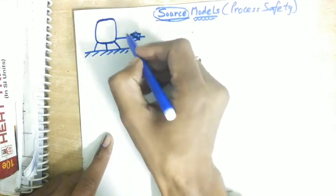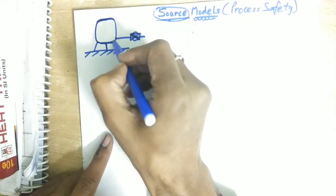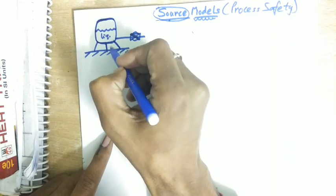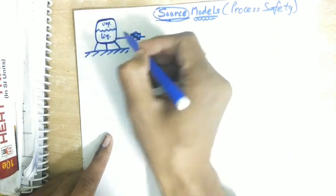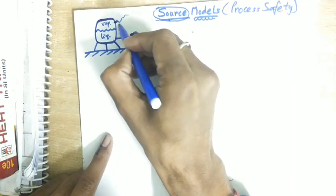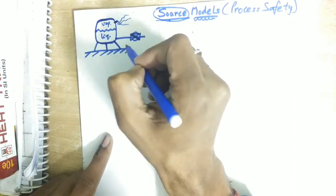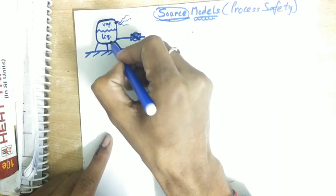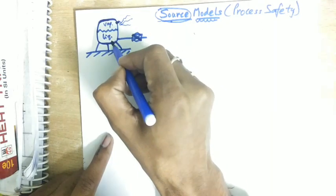This vessel has an inlet pipe with a valve. Suppose there is a leak here in the vessel. There is a liquid level up to this height and vapor level above. If there is a leak here, gases will move out from here. The vapor will move out from the top if there is a leak at the top.